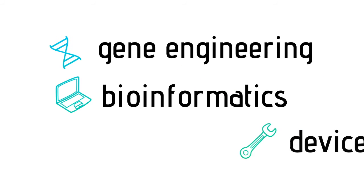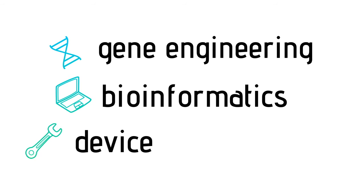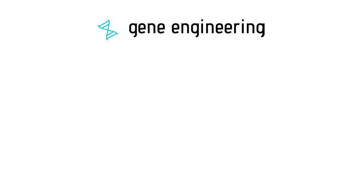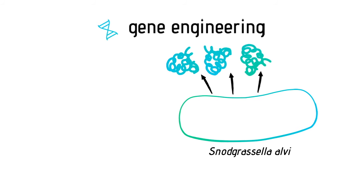This summer, we divided into three different sub-teams in order to address various aspects of our project. The gene engineering team is working to engineer a functioning type 1 secretion system in Snodgrassella alvi, a natural bee gut microbe. Different detoxifying enzymes could then be inserted into our genetic construct and secreted from S. alvi directly into the bee hind gut.